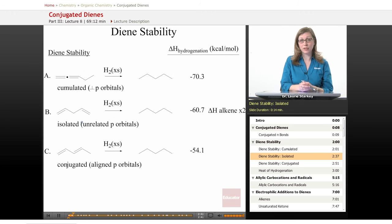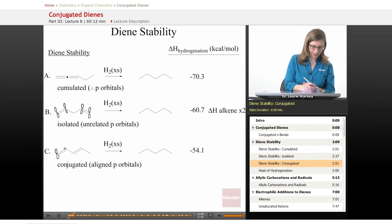Here we have pi bonds that are unrelated - they're isolated. We have the p orbitals on these two carbons that have no relationship at all to the p orbitals on the other two carbons.